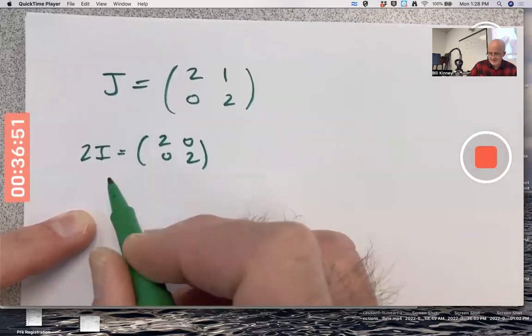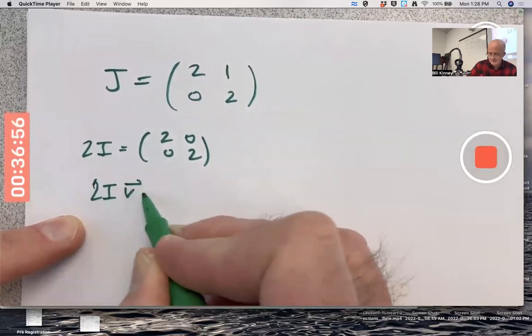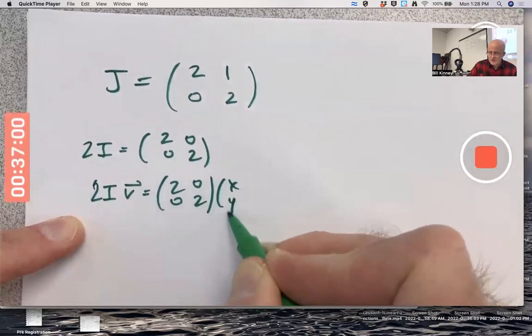Because you multiply this times any non-zero vector or even the zero vector and you get that vector back or two times it back, excuse me.